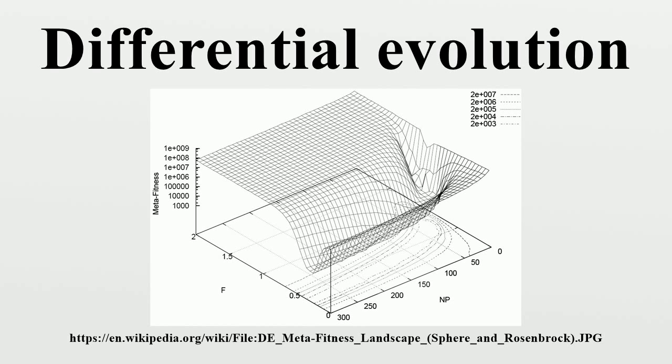That is, replace x with y in the population. Pick the agent from the population that has the highest fitness or lowest cost and return it as the best found candidate solution. Note that F is called the differential weight and CR is called the crossover probability.